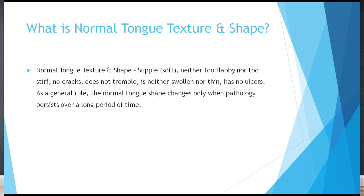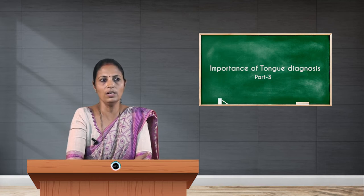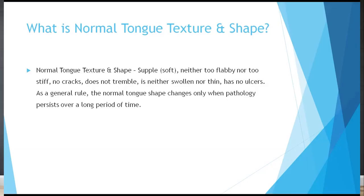Next we look at the texture and shape of the tongue. A normal tongue is supple — neither too floppy nor too stiff — with no cracks. When asked to stretch the tongue, the person will not tremble, and the tongue will not be swollen or too thin. There are no ulcers on a normal tongue.